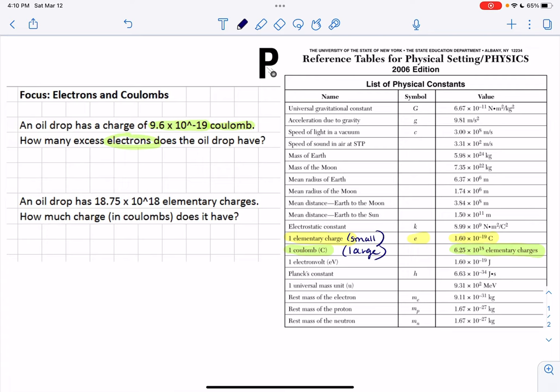All right. So we are converting from coulombs to electrons or elementary charges. So when we set it up, I'm going to set it up just like we would for dimensional analysis, coulombs. And we need to set it up with a ratio.